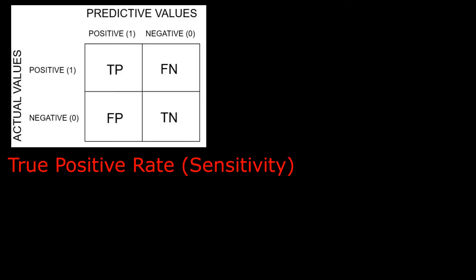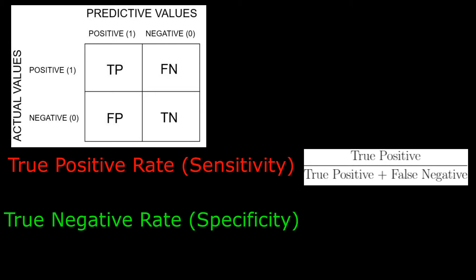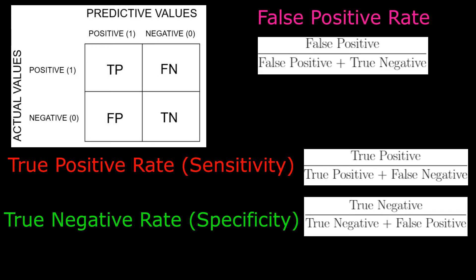The true positive rate, otherwise known as sensitivity, is defined as true positive divided by true positive plus false negative. You can interpret this as the proportion of true positive observations with respect to all positive observations. The true negative rate is defined as true negative divided by true negative plus false positive — the proportion of true negative observations with respect to all negative observations. The false positive rate is defined as false positive divided by false positive plus true negative. You can interpret this as the proportion of negative observations that were mistaken as positive, with respect to all negative observations. With these important rates in mind, we can now refer to the most famous classification metric: area under the curve, or the AUC-ROC curve.